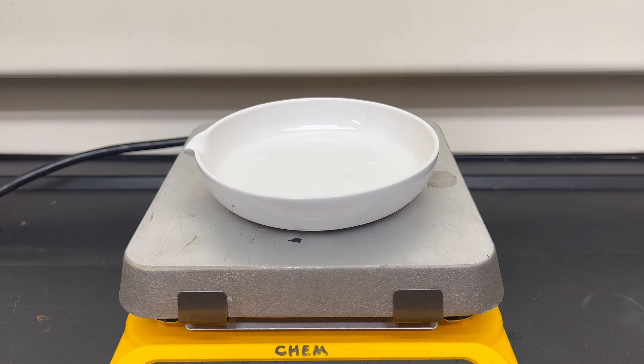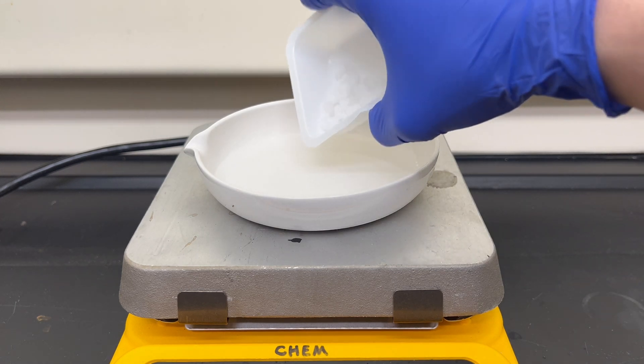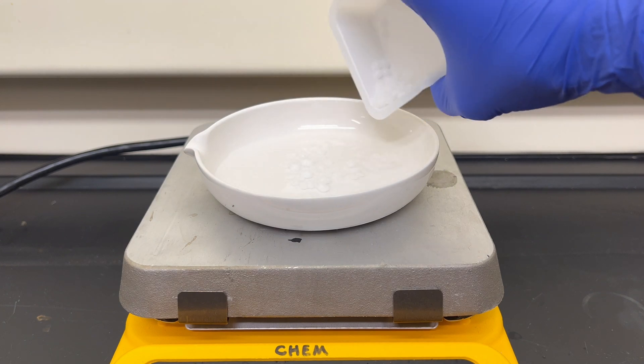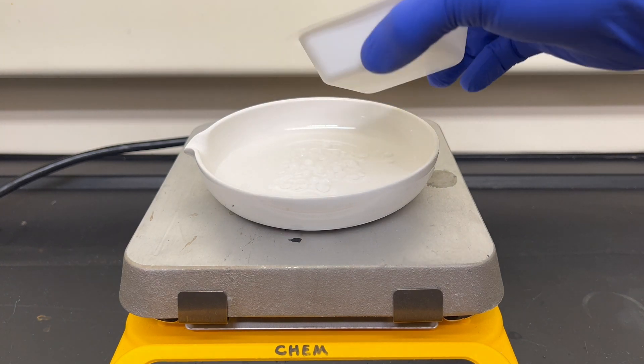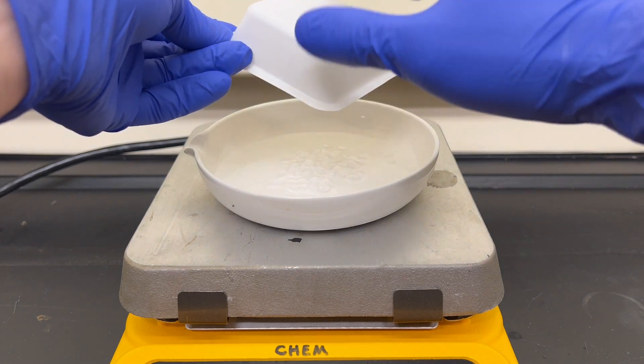I place 10 grams of sodium hydroxide and 25 milliliters of water into an evaporating dish, using a hot plate as a heat source. The sodium hydroxide is stirred in until wholly dissolved.